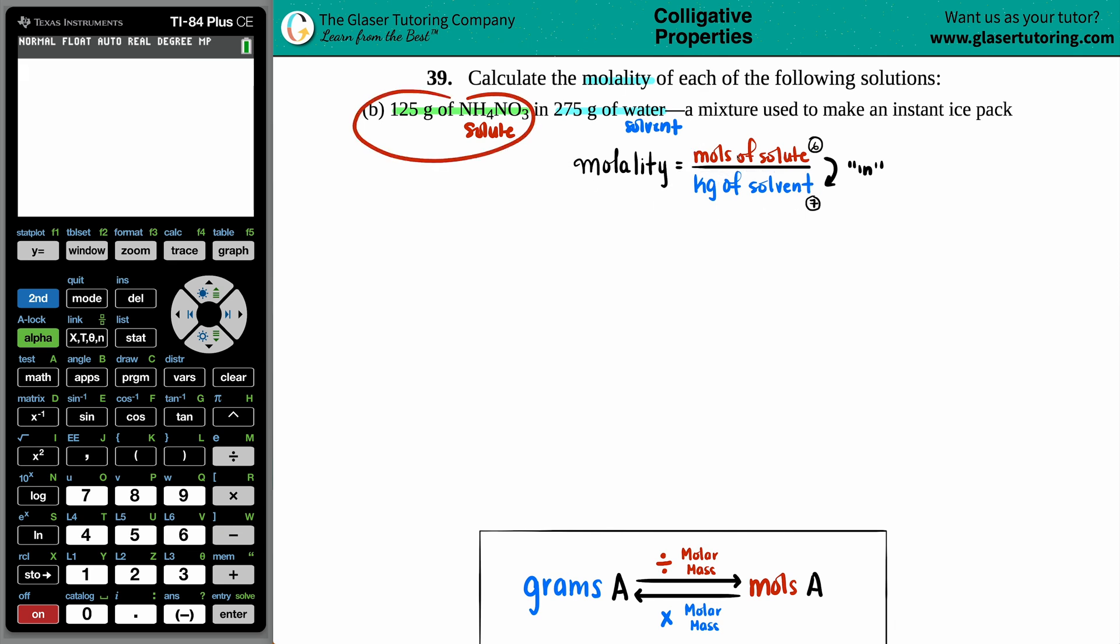So for the solute, I have to get moles. So I'm going to take my 125 grams of the NH4NO3, and just quickly convert it into moles. Now, how do we do that? All the way back to the beginning of chem, right? If you have a gram amount of something, and you want to find out the moles, all you got to do is just take the grams and divide by the molar mass, which is on the periodic table.